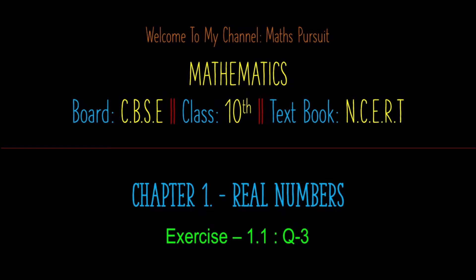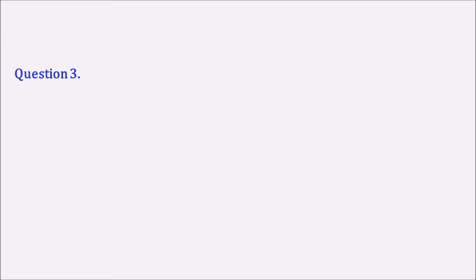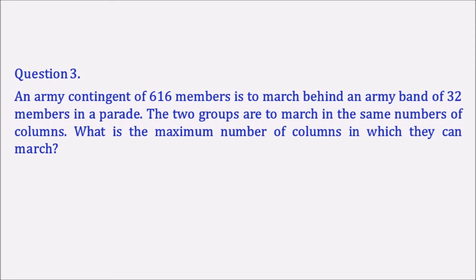Let's see what we have in question number 3. An army contingent of 616 members is to march behind an army band of 32 members in a parade. The two groups are to march in the same number of columns. What is the maximum number of columns in which they can march?